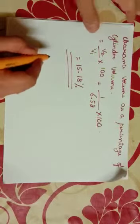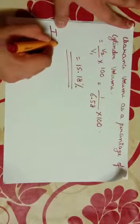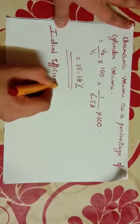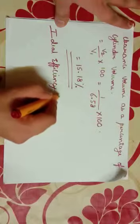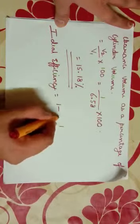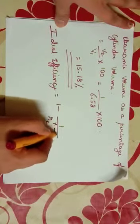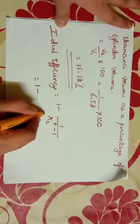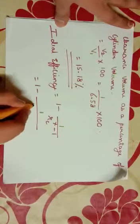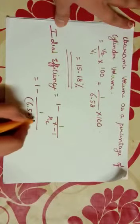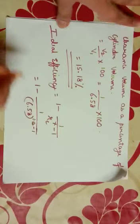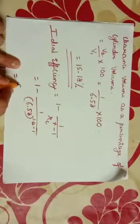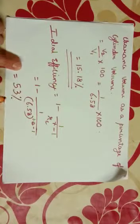This is clearance volume as a percentage of cylinder volume. Then ideal efficiency is 1 minus 1 by Rc raised to gamma minus 1. That is equal to 1 minus 1 by 6.58 raised to 1.4 minus 1. The efficiency will be 53 percent.